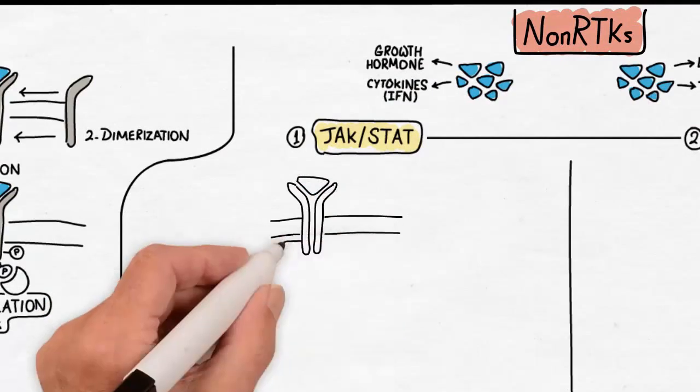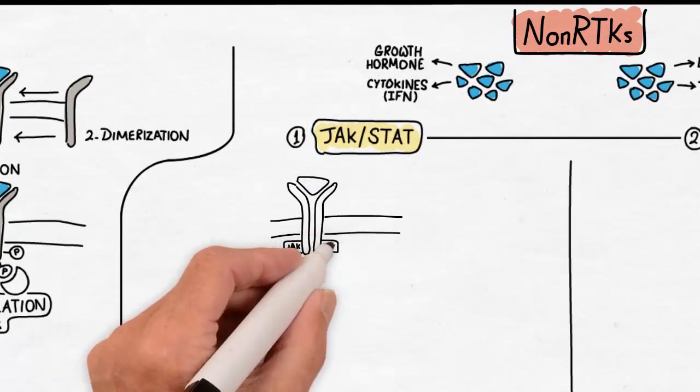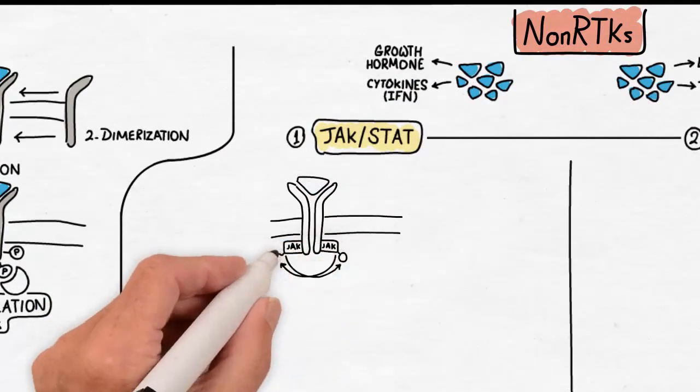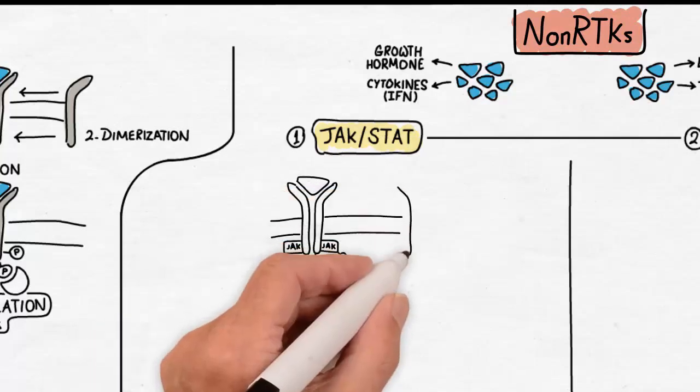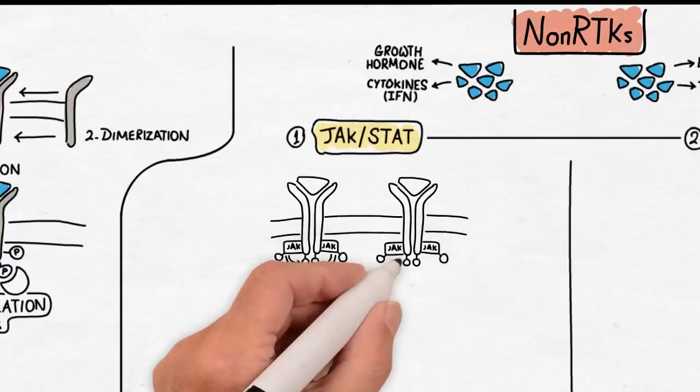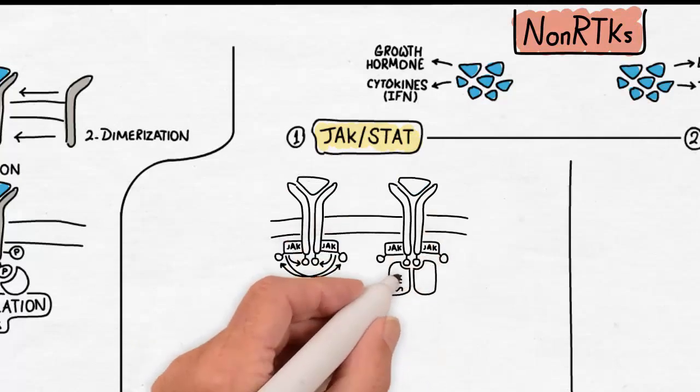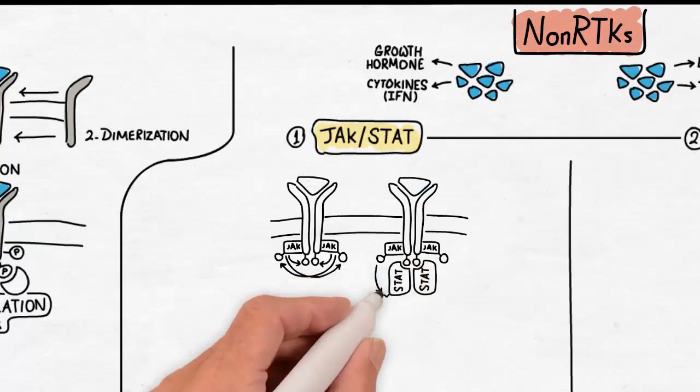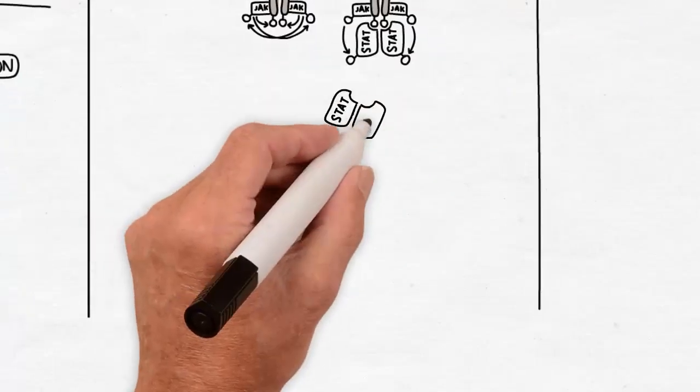In the JAK-STAT signaling, once dimerization occurs, the JAKs or Janus kinases start phosphorylation of the receptor and phosphorylation of each other as well. Then the STAT proteins get close and bind to the docking sites. STAT means signal transducer and activator of transcription.